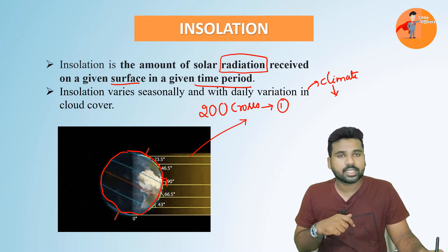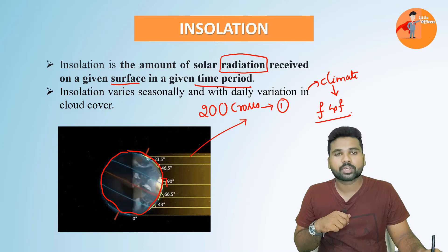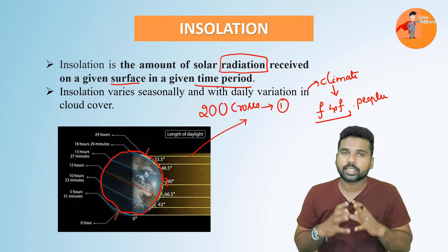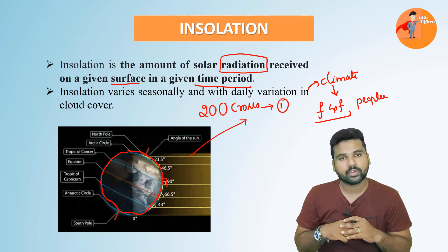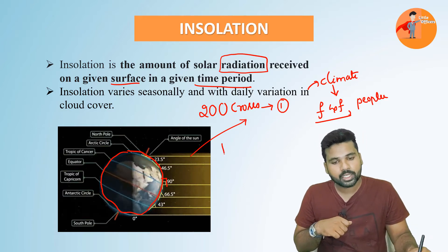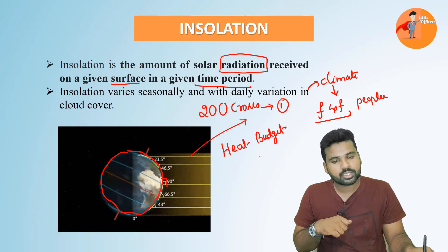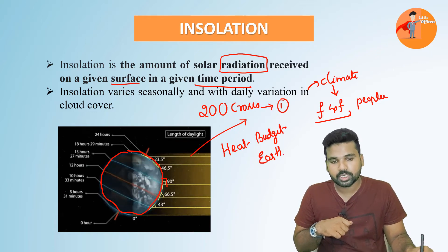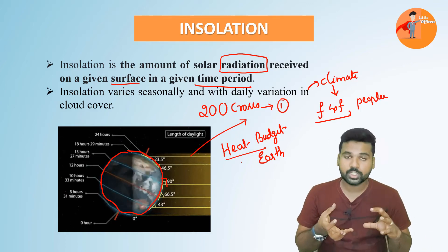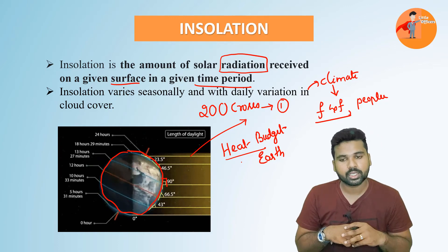If the climate varies, then automatically the flora, fauna, biodiversity, and even the people living in that area are equally influenced. That is why insolation is very important. Apart from that, it also plays a very important role in understanding the heat budget of the earth — meaning how the energy received by the earth is being managed by the earth. That will be discussed in another video.